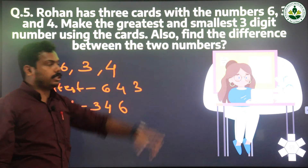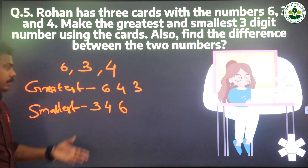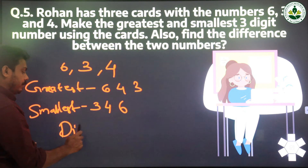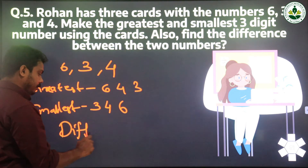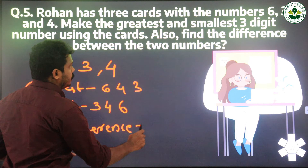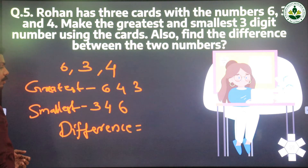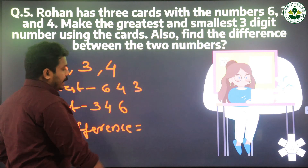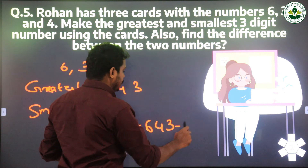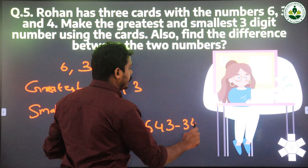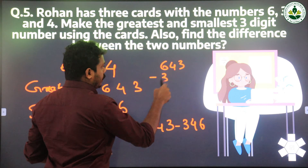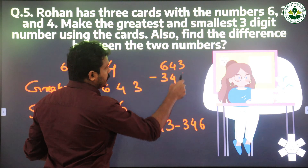Also find the difference between the two numbers. For finding the difference we use subtraction: 643 minus 346.